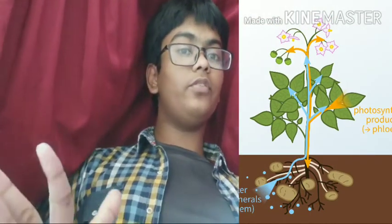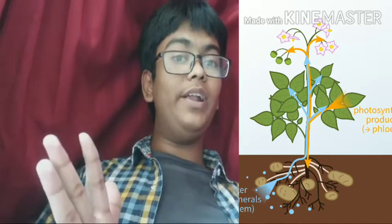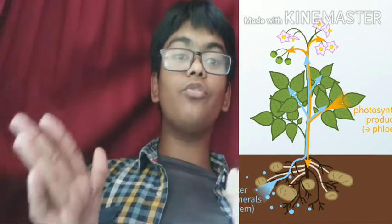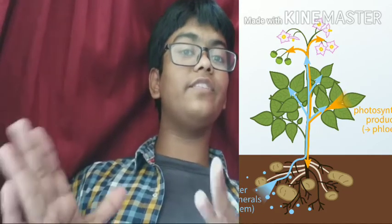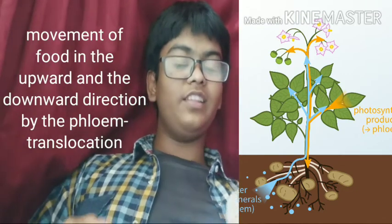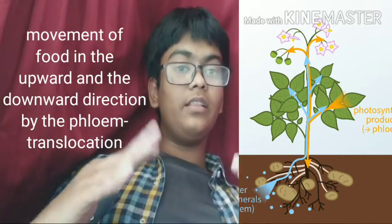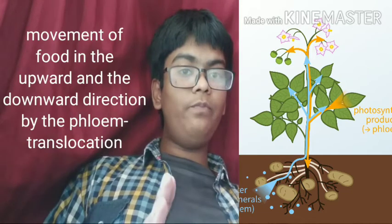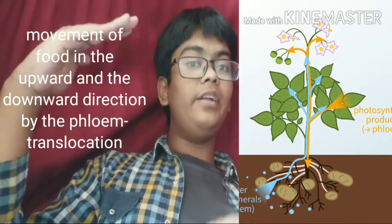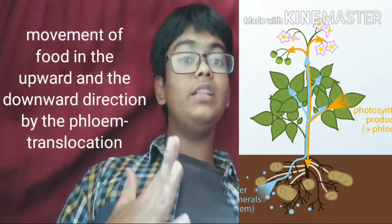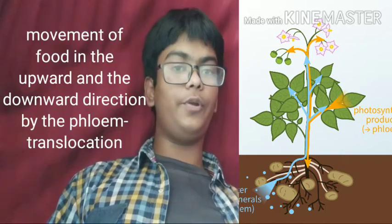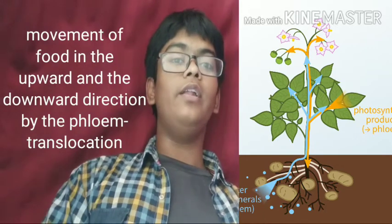Let us first understand how food is transported in plants. Food is produced by the process of photosynthesis. It is produced as glucose and stored in the plant body as starch. The phloem conducts food in the upward and downward direction.